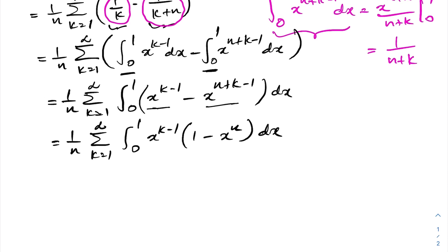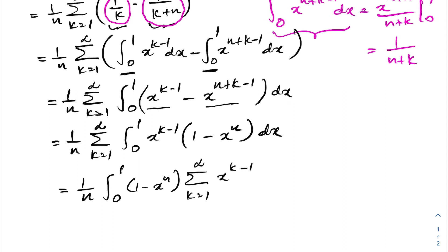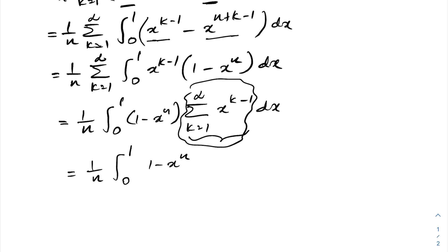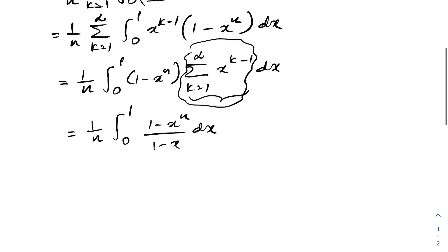Now I'm going to switch the integral sign and the sigma notation, giving us 1 over n times the integral from 0 to 1 of (1 minus x to the n) times the sum from k equals 1 to infinity of x to the k minus 1 dx. We know this infinite series represents 1 over 1 minus x, so we can write 1 over n times the integral from 0 to 1 of (1 minus x to the n) over (1 minus x) dx.